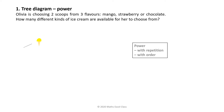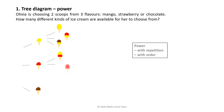For the first scoop, she can have mango, strawberry, or chocolate. For the second scoop, after choosing mango, she can have mango again, strawberry, or chocolate. After strawberry: mango, strawberry, or chocolate. After chocolate: mango, strawberry, or chocolate.